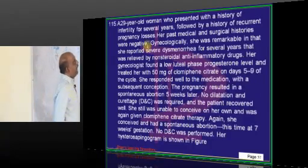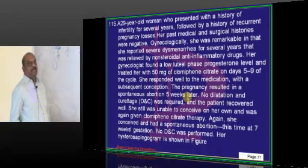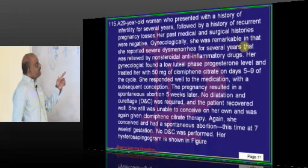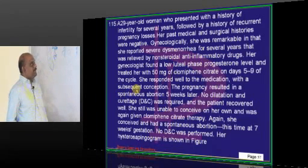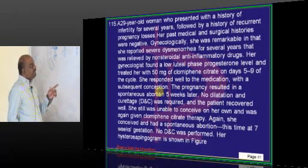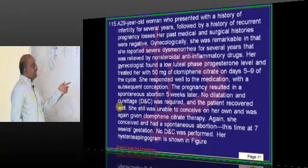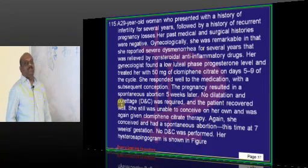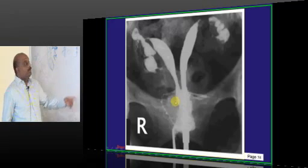A 29-year-old with a history of infertility with recurrent pregnancy losses. Gynecologically, she was remarkable in that she has severe dysmenorrhea which was relieved by NSAIDs. There is low luteal phase progesterone and she was treated with clomiphene citrate. She responded and conceived, but that pregnancy resulted in one more spontaneous abortion within 5 weeks. And her hysterosalpingogram is showing...